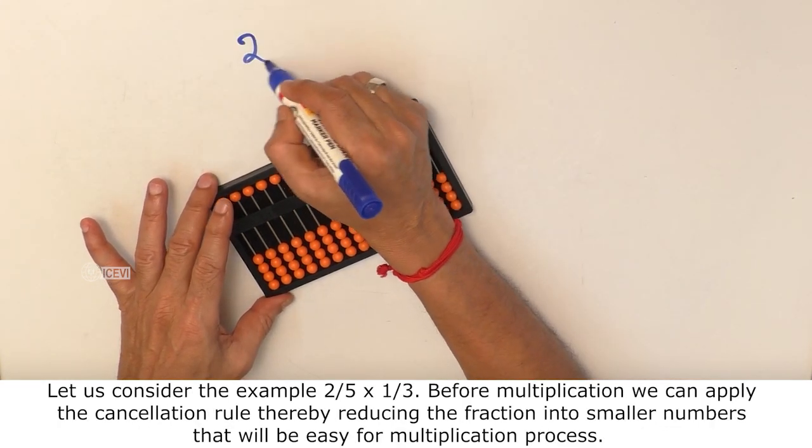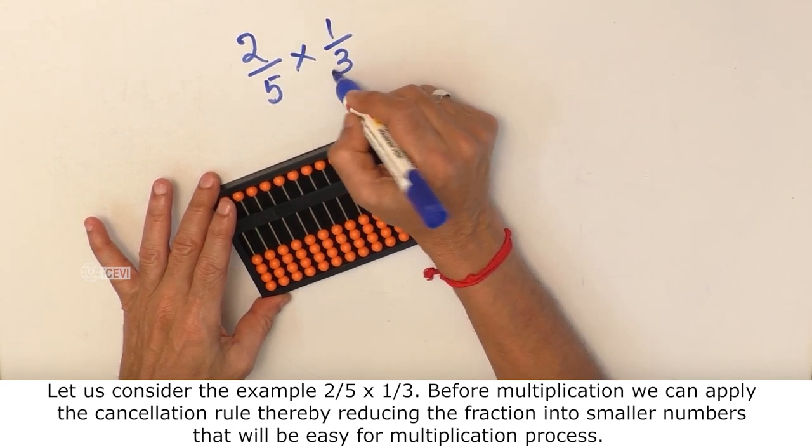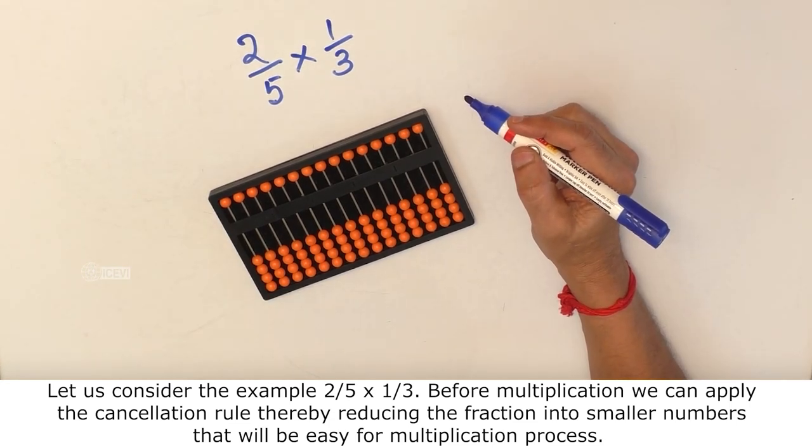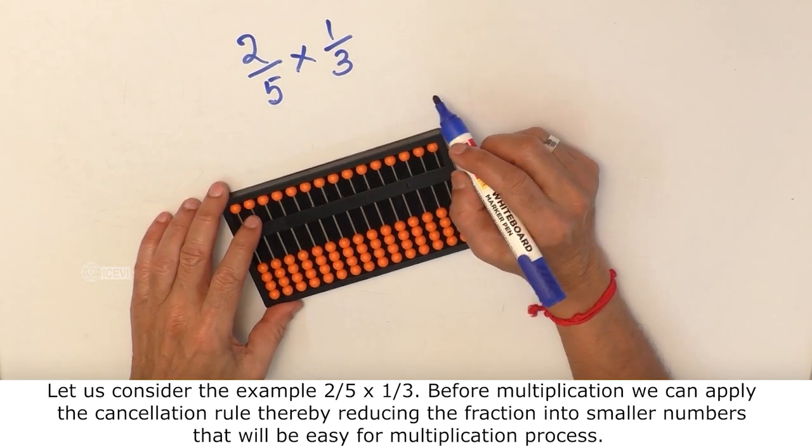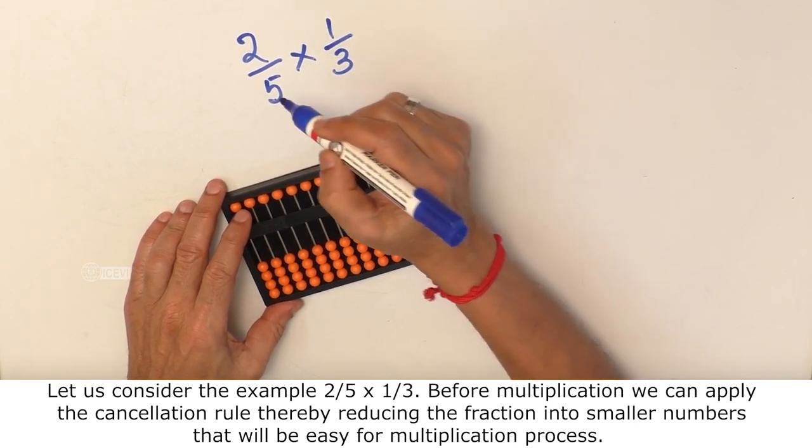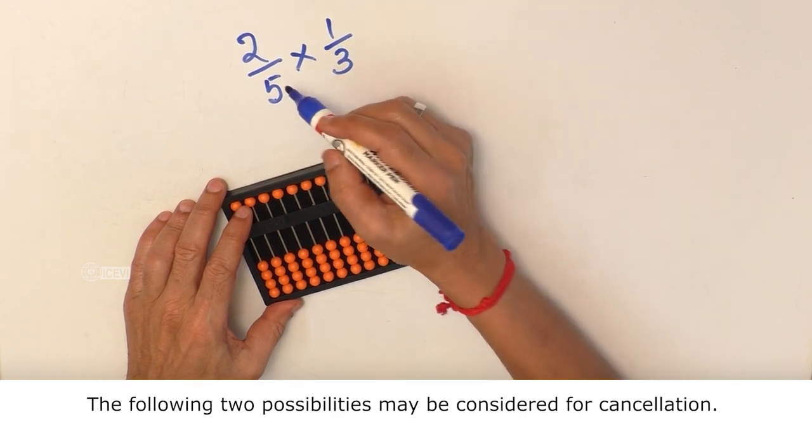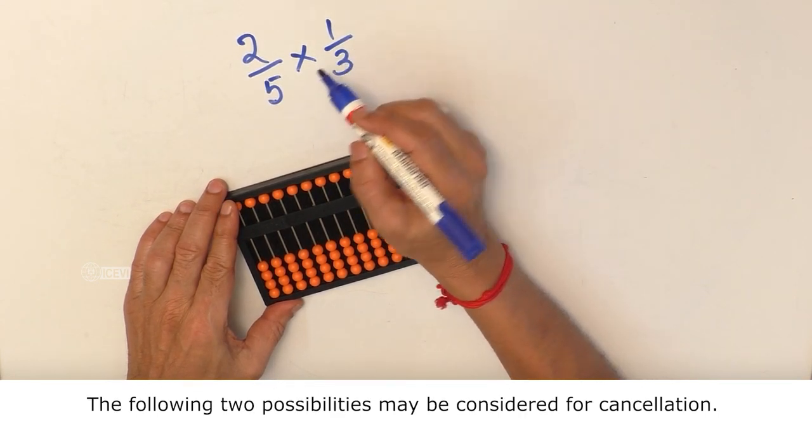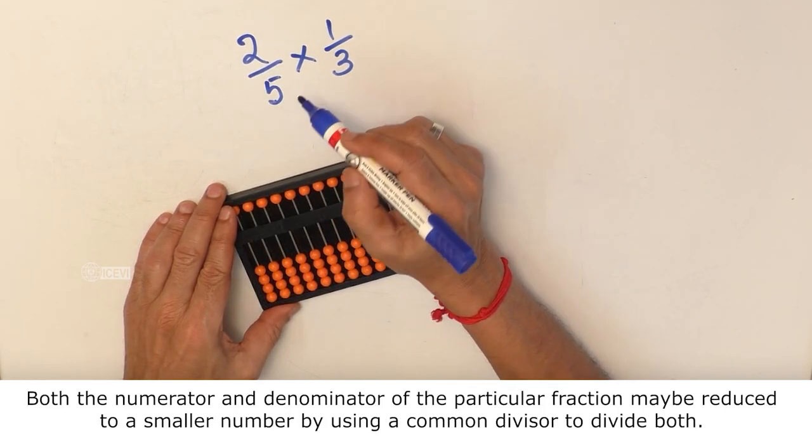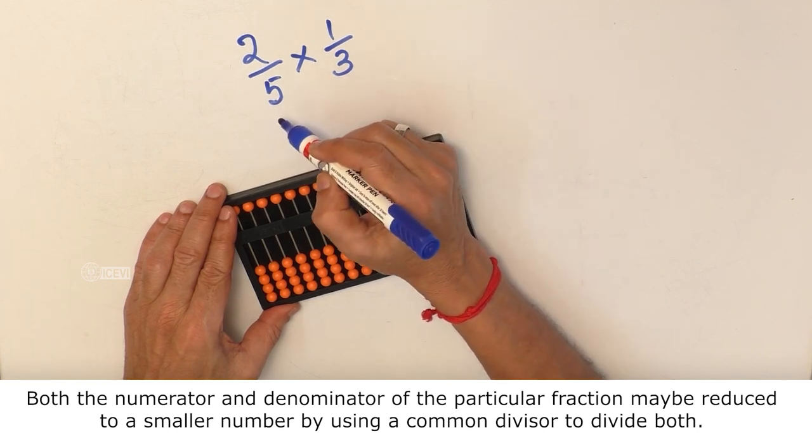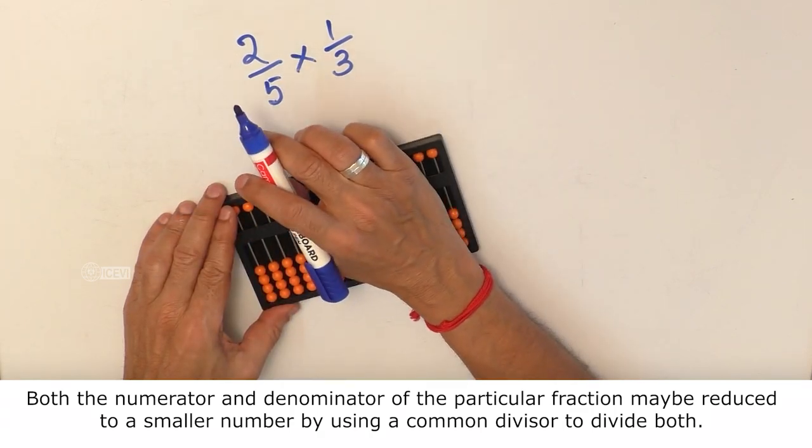Let us consider the example 2 by 5 multiplied by 1 by 3. Before multiplication, we can apply the cancellation rule, thereby reducing the fraction into smaller numbers. That will be easy for multiplication process. The following two possibilities may be considered for cancellation.